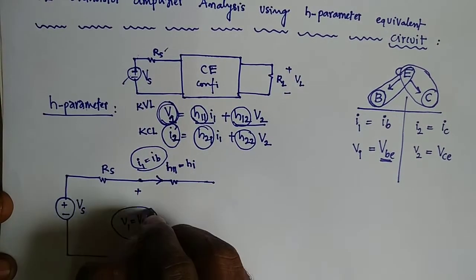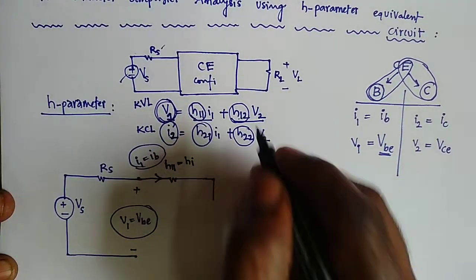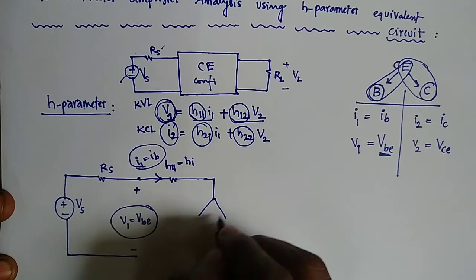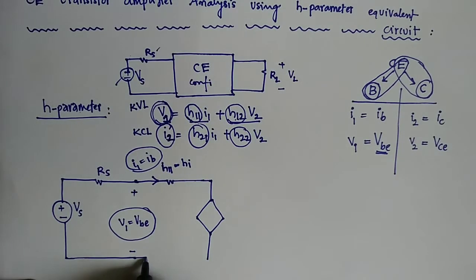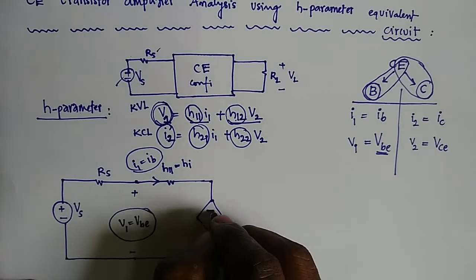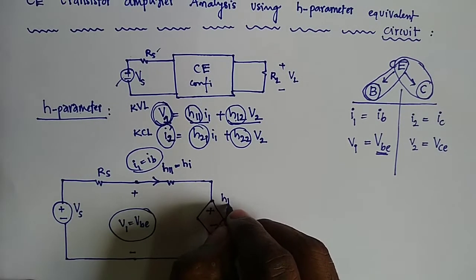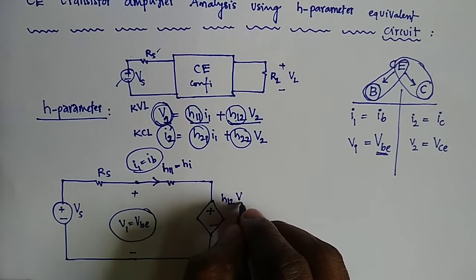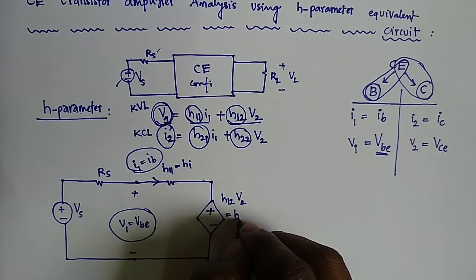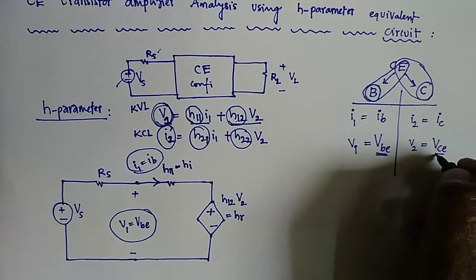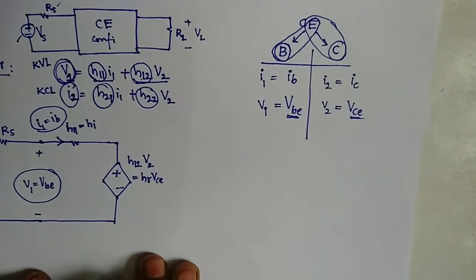V1 equals VBE. H12 = V1/V2 represents a dependent voltage source, because the left side value V1 depends on H12·V2. This is represented as HR, where V2 equals VCE, so the dependent source is HR·VCE.